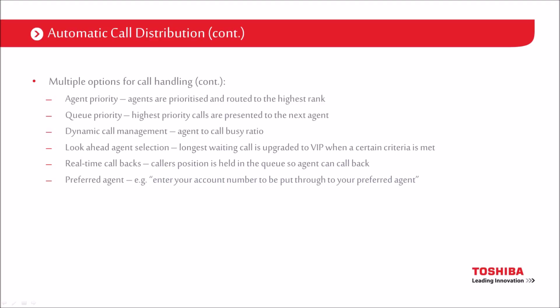We can do queue priority — we could have two or three queues with the same agents in each, and one of them is the VIP line, so that can have a higher ranking than the second queue. That way we get to our important customers first, then we get to the rest. Working on the principle that 80% of our business comes from the top 20%, it's not a bad thing to prioritise that top 20% who are spending the money.